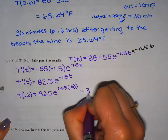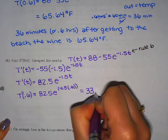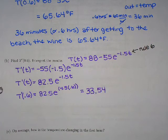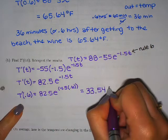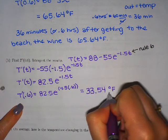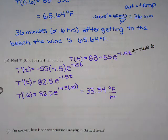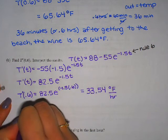So our instantaneous rate of change is going to be 33.54 what? What's our units on this? It's a rate of change so it has both. So it's going to have the output units over the input units.